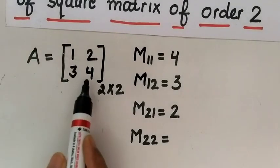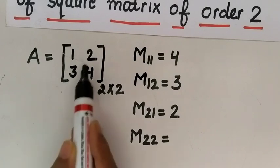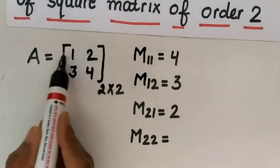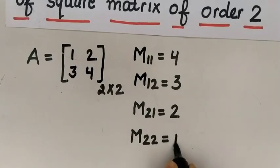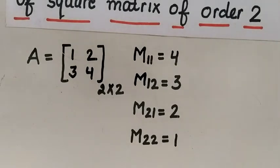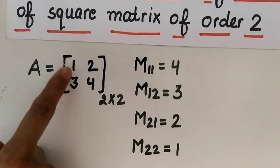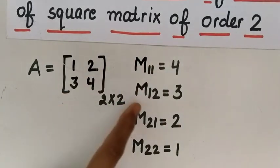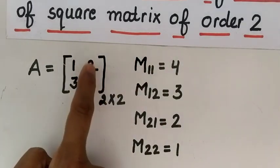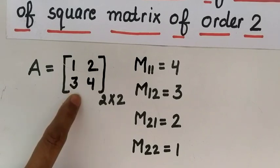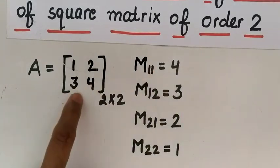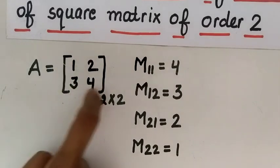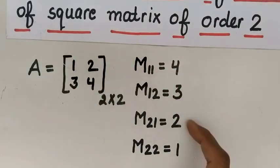For M22, we delete the corresponding row and column of element a22 and the remaining element is 1, so M22 equals 1. So to summarize: M11=4, M12=3, M21=2, M22=1. It is very simple — delete the row and column of the element and whatever remains is the minor.